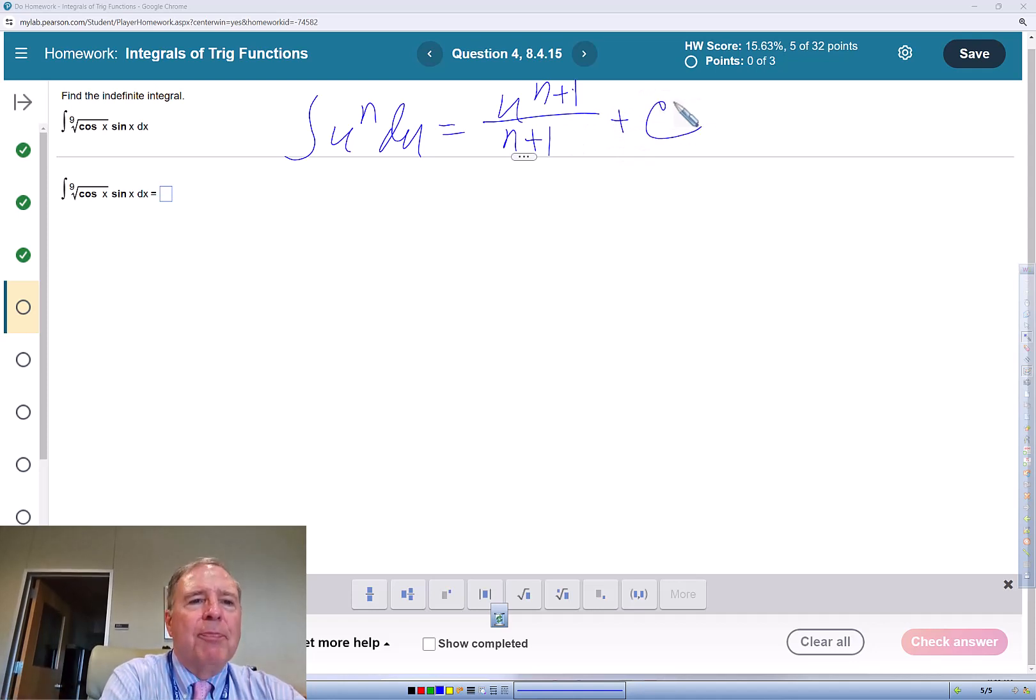I'm going to rewrite this integral as in parentheses cosine of x to the power of 1 ninth. So the exponent on the thing inside is the numerator. The index on the radical is the denominator when we